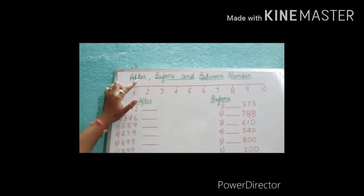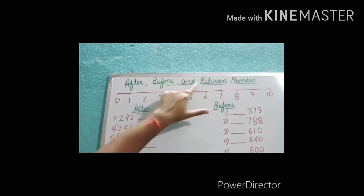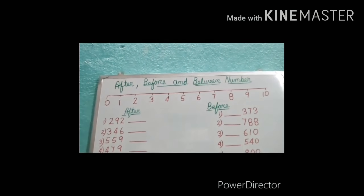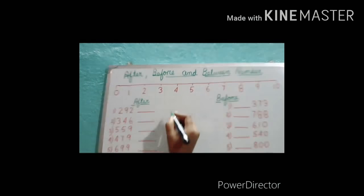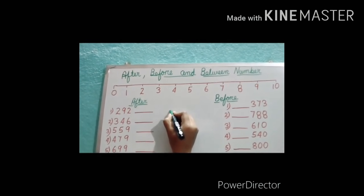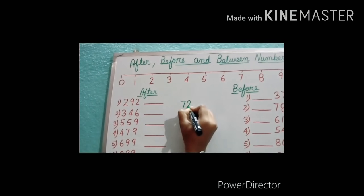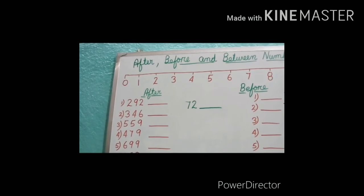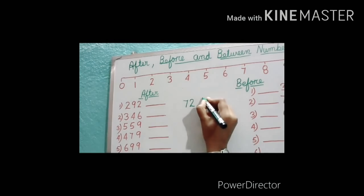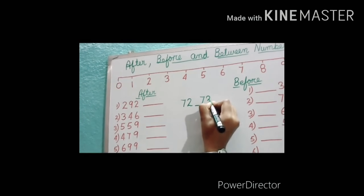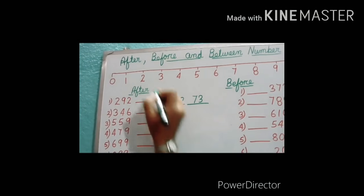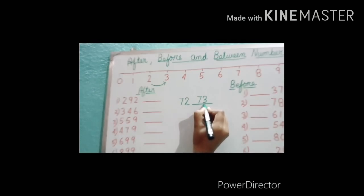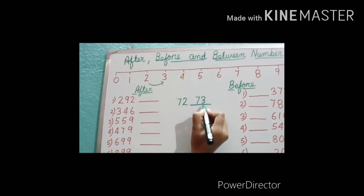Now the next topic is after, before, and between numbers. You have already read about after, before, and between numbers in standard 1. Can you tell me what is the after number of 72? Yes, very good — 73. We have done forward counting. After 2, what is the next number? 3. So after 72, the after number is 73.